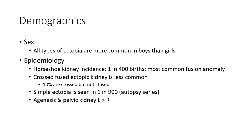Demographics: All types of ectopia are more common in boys than girls. Epidemiology: Horseshoe kidney has an incidence of 1 in 400 births and is the most common renal fusion anomaly. Crossed fused ectopic kidney is less common; 10% are crossed but not fused. Simple ectopic kidney is seen in 1 in 900.